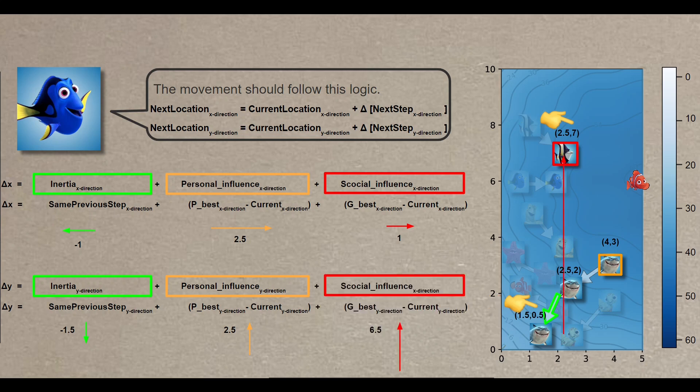I'm not finished yet. Instead of simply combining these components by addition, we might need to assign them different weights. In literature, it's common to further break down personal and social weights into components like R1 times C1, R2 times C2, where R1 and R2 represent random factors introduced to add an element of randomization to the algorithm, where C1 and C2 stands for the personal and social weights. Changing these weights affect the entire behavior of the swarm.